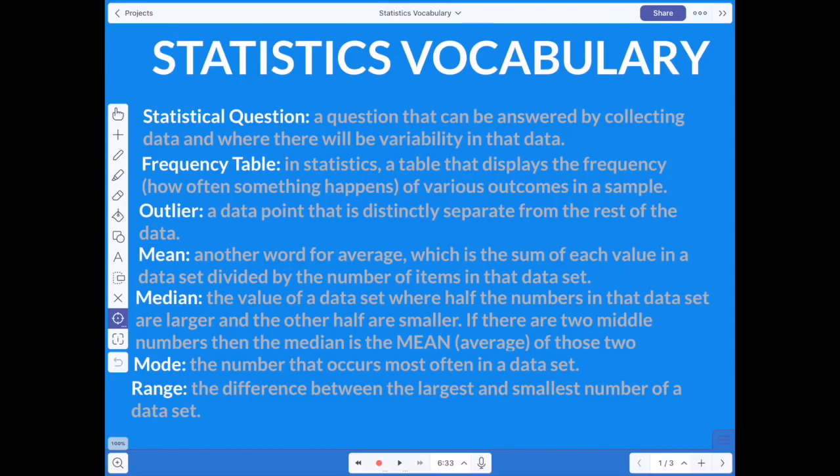Mode. The number that occurs most often in a data set. If you're going back to that age question, and you get six people that say 11, and nine people that say 12, and five people that say they're 13, the mode is the number that occurs most often. In this case, the answer for 12 happens more often than the other two. So whatever that answer was, that is the mode. The range is the difference between the largest and smallest number in a data set. So if you have some people saying they're 11, some people saying they're 13, you just subtract 11 from 13 and you get two. So the range is two.